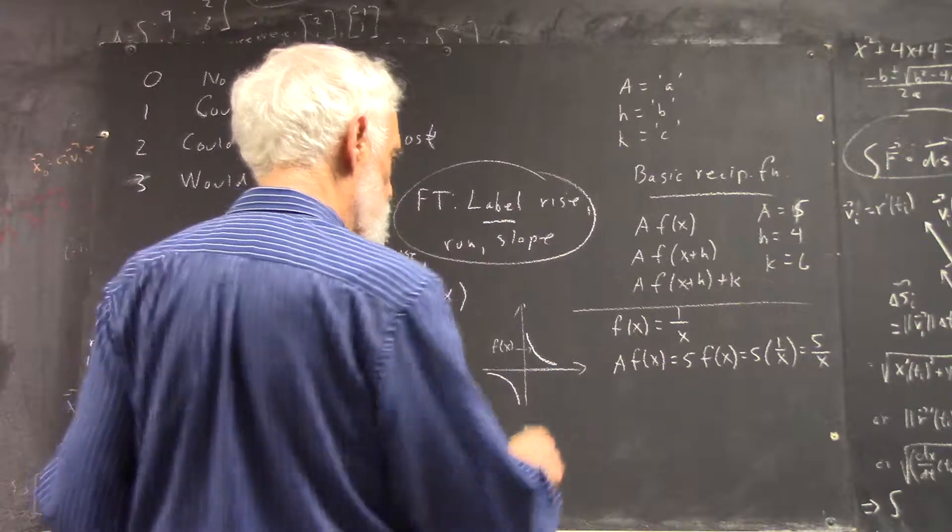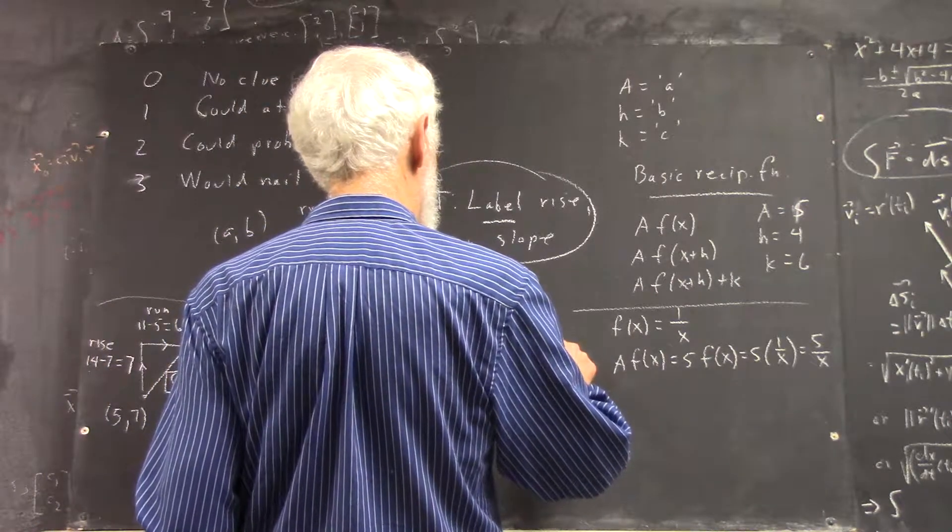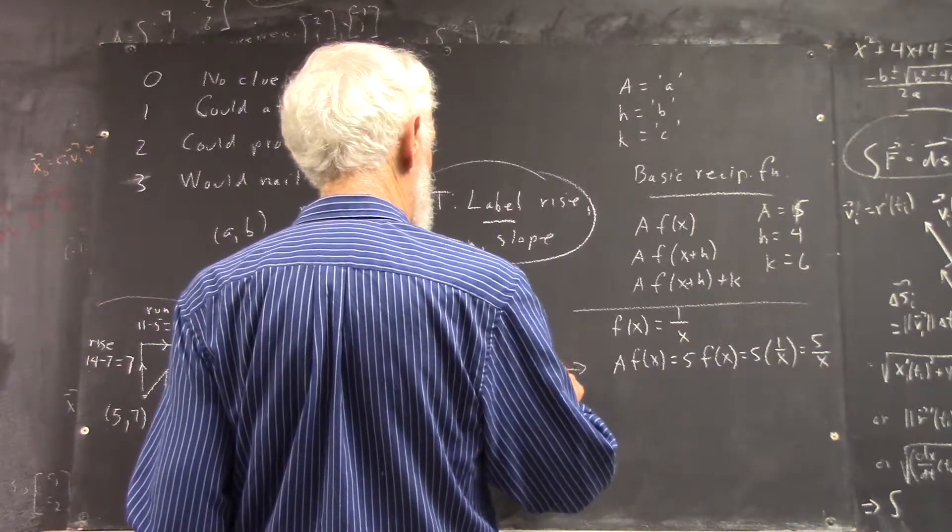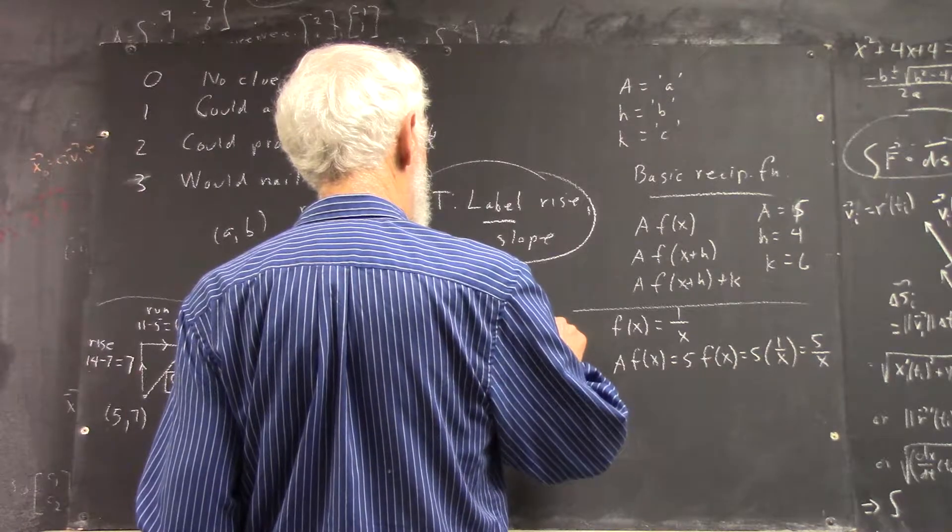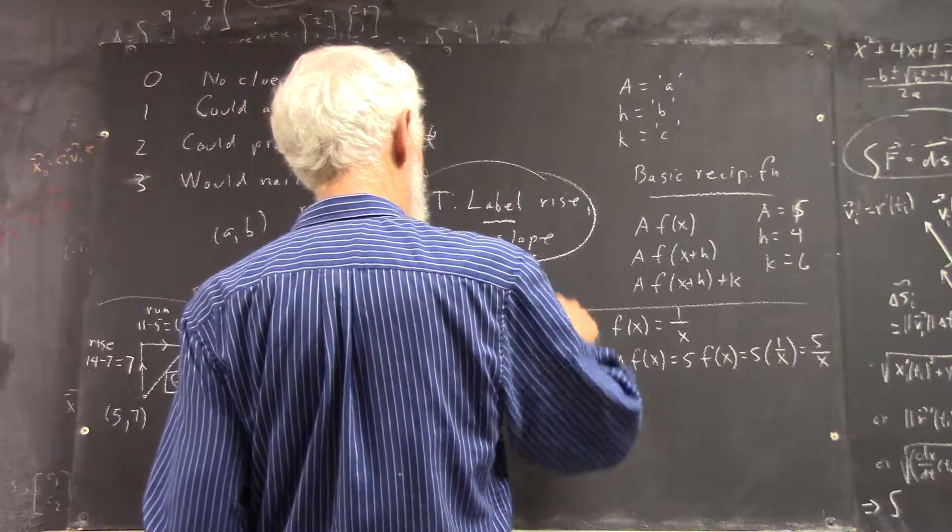5 f of x would take every point and move it 5 times as far from the origin. And you should understand what I'm doing.